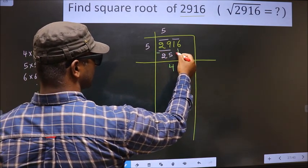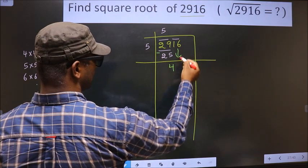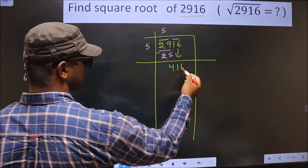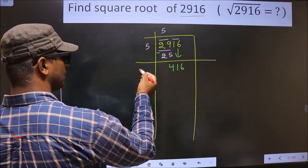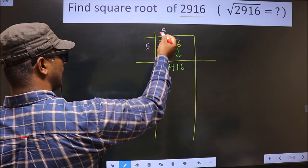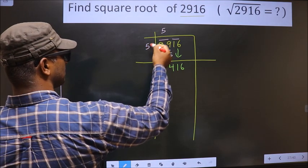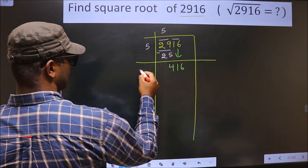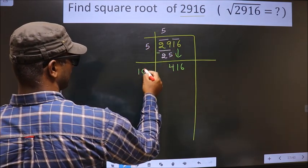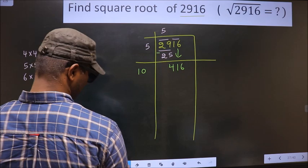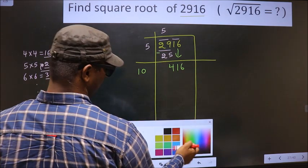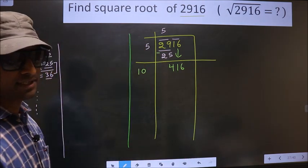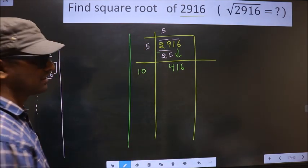Now this pair will come down making it 416. Here you should add these two numbers: 5 plus 5 equals 10.